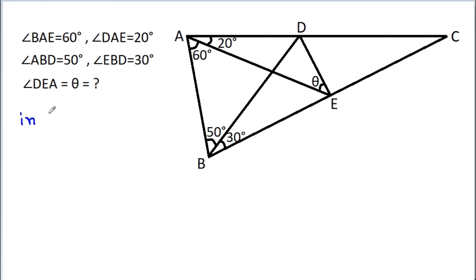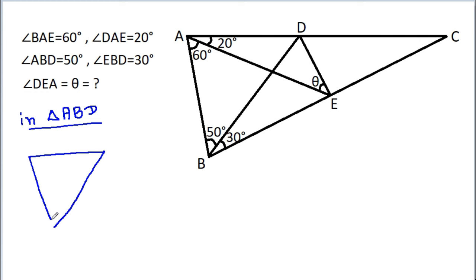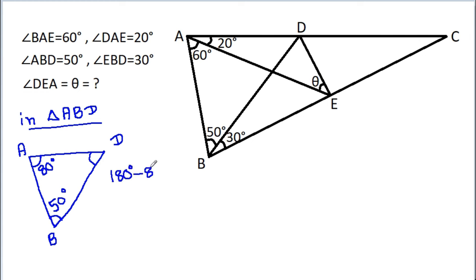In triangle ABD, angle BAD is 60 plus 20, that is 80 degrees. Angle ABD is 50 degrees. So the third angle will be 180 minus 80 minus 50, that will be 50 degrees.